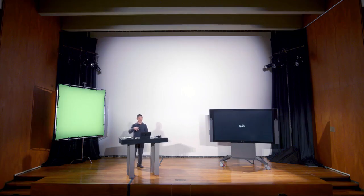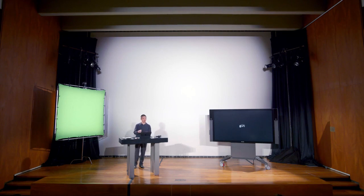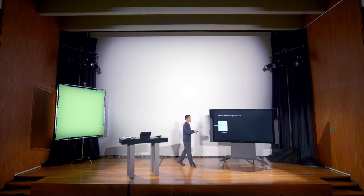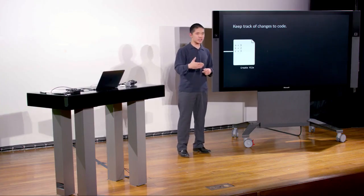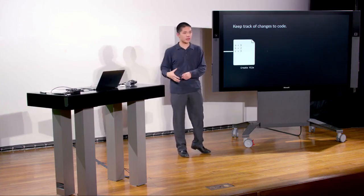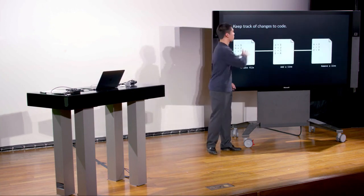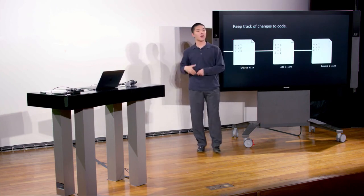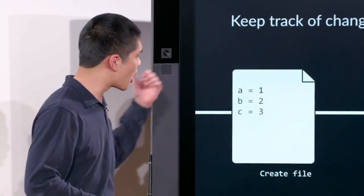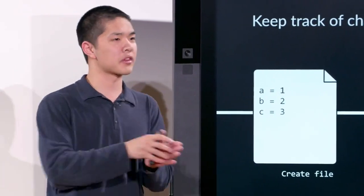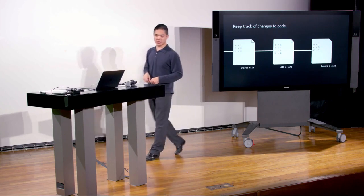At a high level, the first thing Git is good at is keeping track of different changes to your code, so you have access not only to the latest version but to the entire history — starting from an initial file, adding lines, removing lines — you can keep track of all those different versions and know how your project developed from the beginning to where you are now.